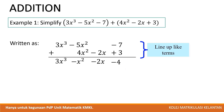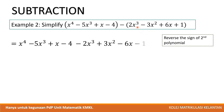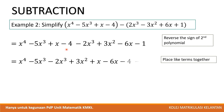Example 2. Simplify x⁴ - 5x³ + x - 4 minus (2x³ - 3x² + 6x + 1). For easy calculation, we reverse the signs of the second polynomial. So positive 2x³ becomes negative 2x³, negative 3x² becomes positive 3x², positive 6x becomes negative 6x, and positive 1 becomes negative 1. Then we group the like terms together — x³ terms with x³ terms, x terms with x terms, and constants with constants.